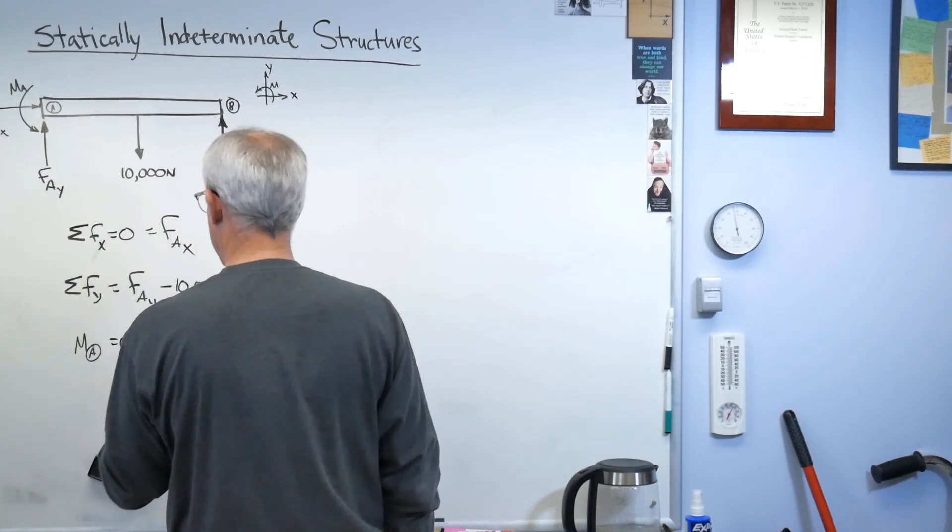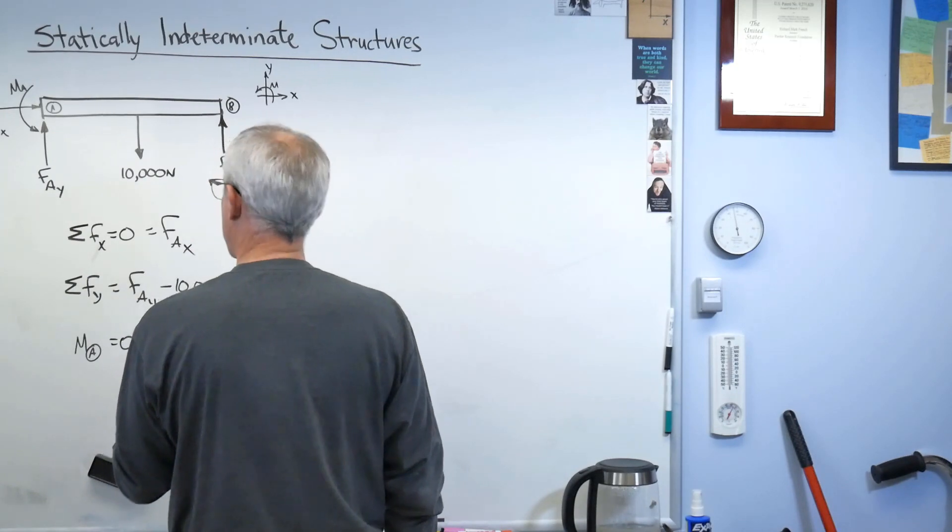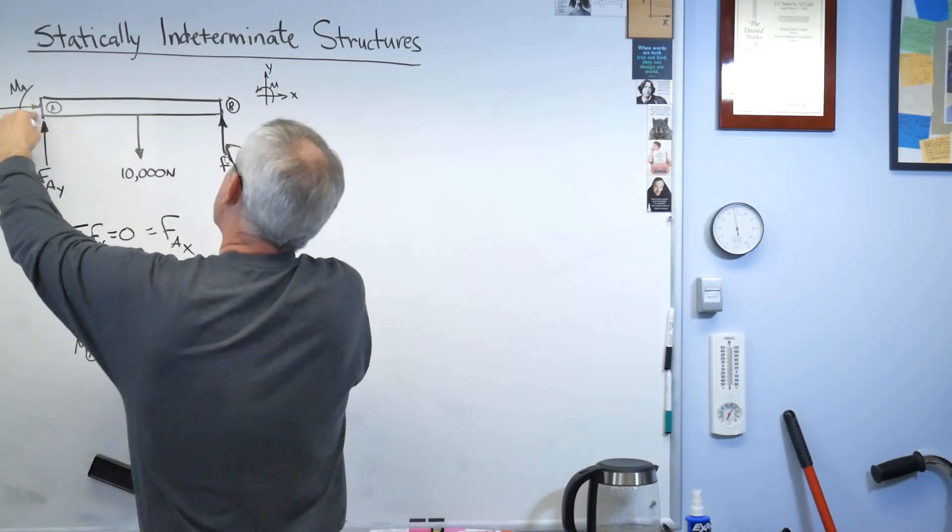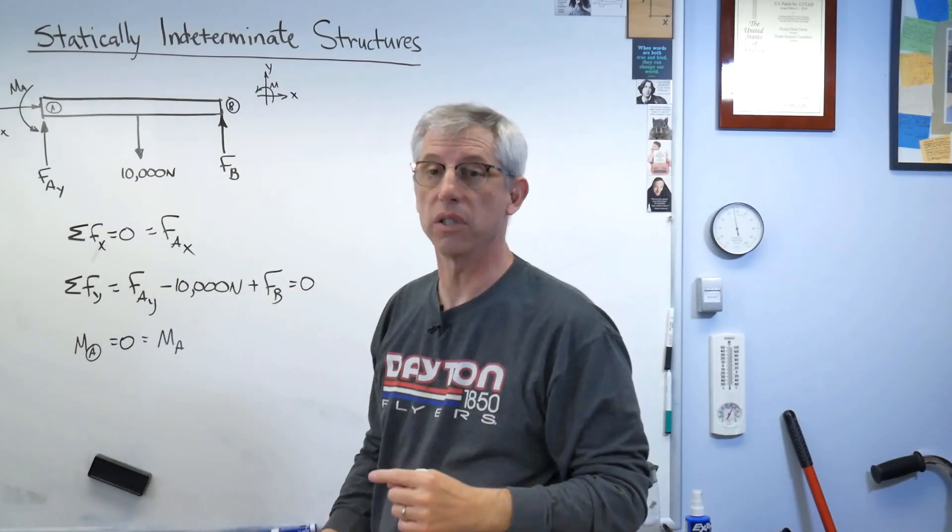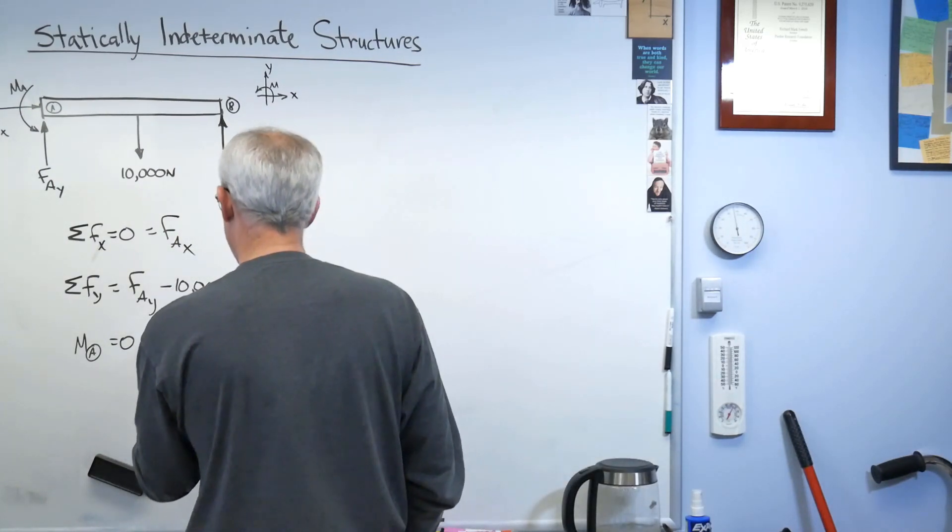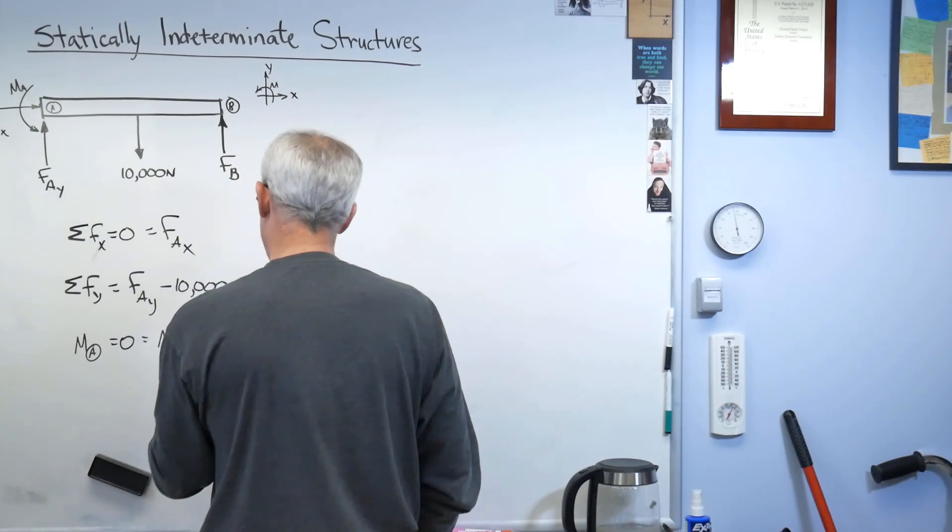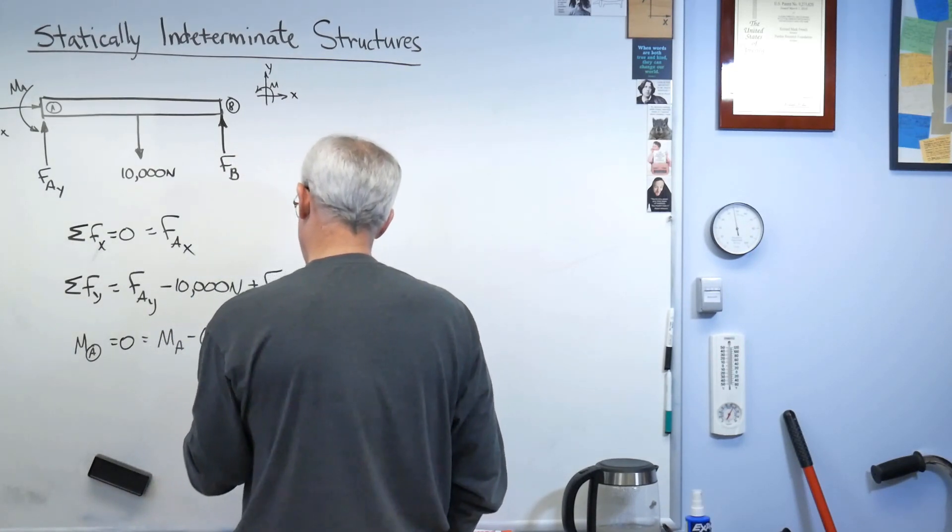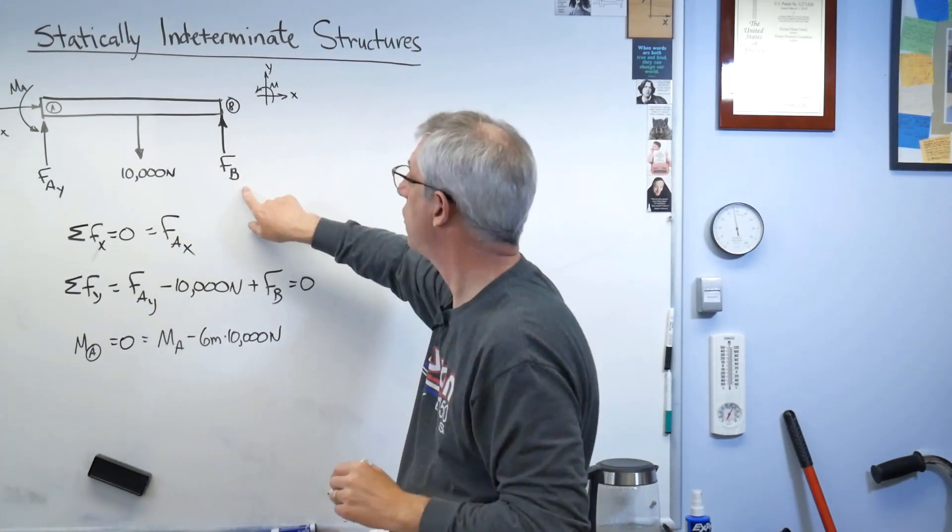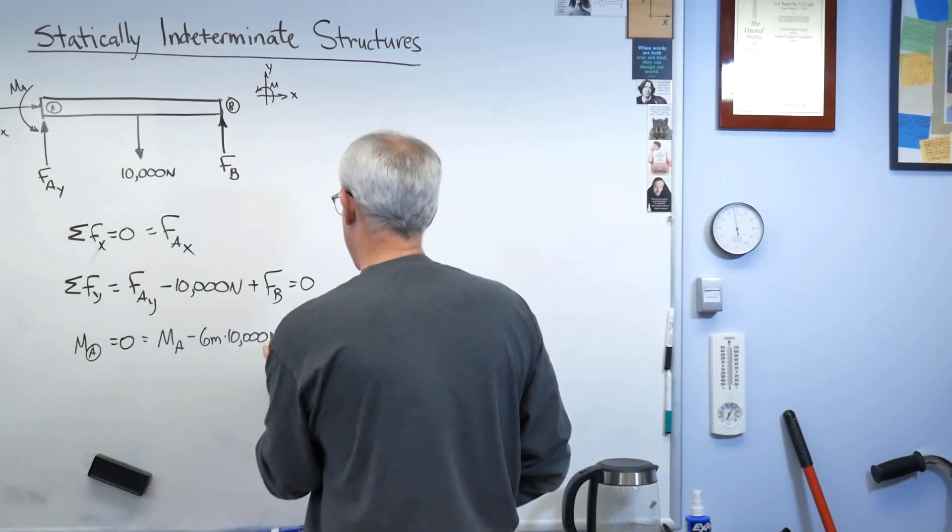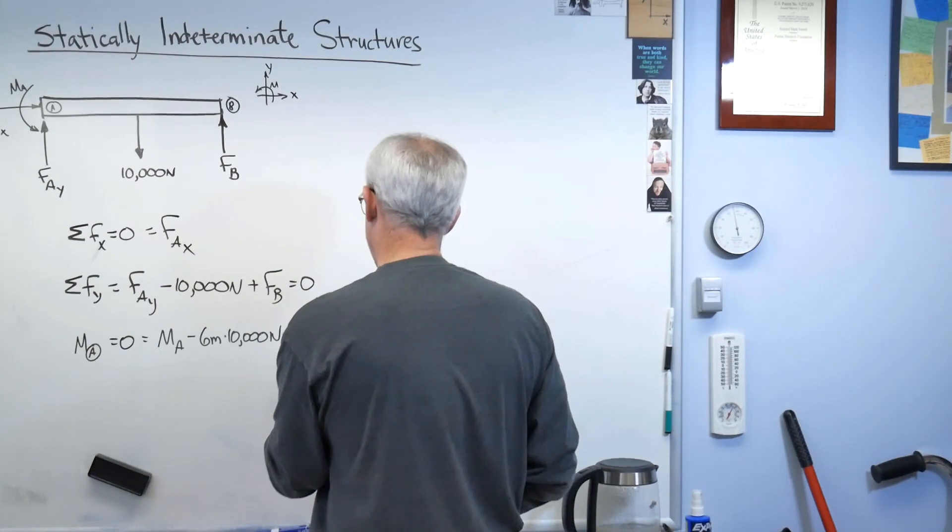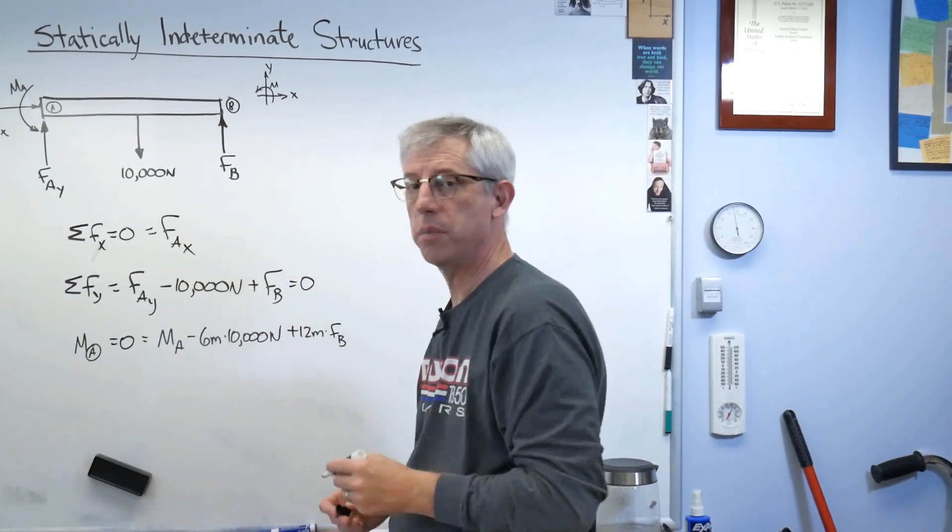So let's see. That's positive. Okay, that was six meters. And it's trying to make the beam go clockwise. Well, that's against my positive sign convention. So that's negative. Okay, last one, FB. Now that's going to be rotating in the positive direction. All right, so there's my three equations.